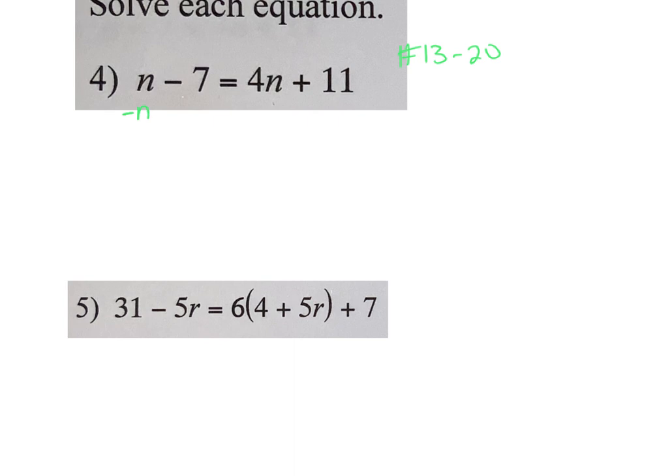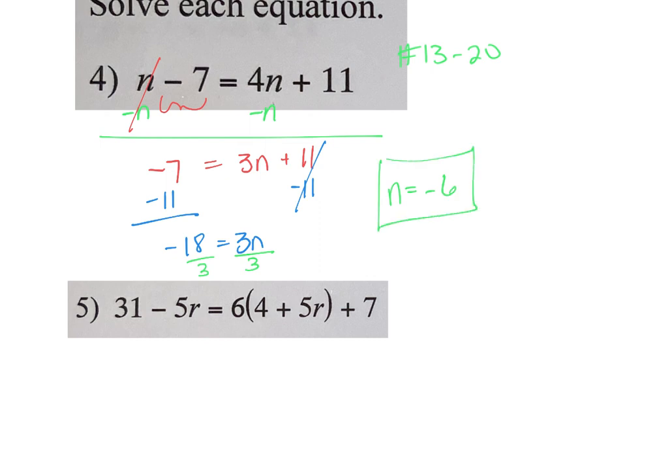You want to get your variables to one side, your numbers to the other. I'm going to subtract my n over. On the left, the n's cancel. Don't forget that is a negative 7. 4n minus 1n is 3n plus 11. Then subtract your 11 over. Negative 7 minus 11 is negative 18. Last step is divide by 3, so we get n equals negative 6.